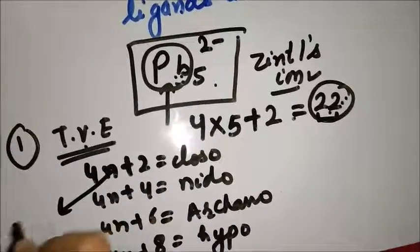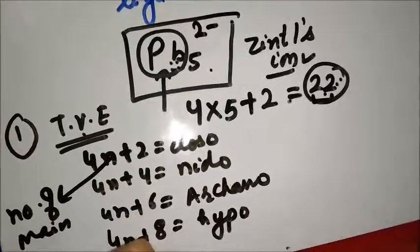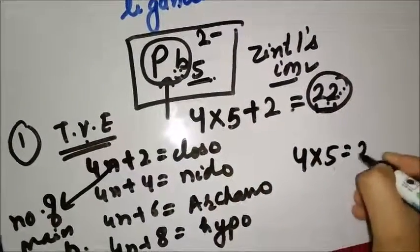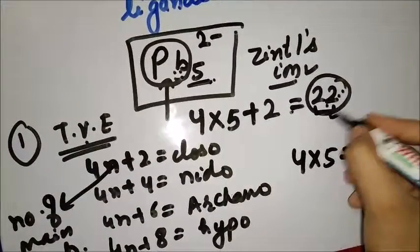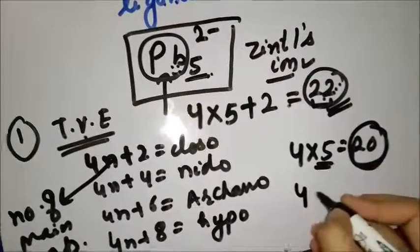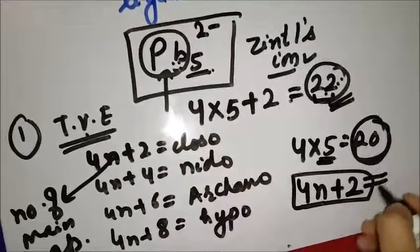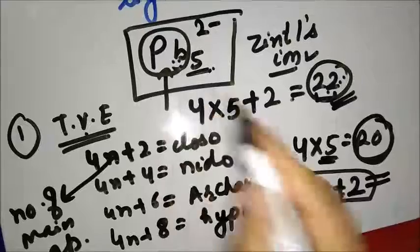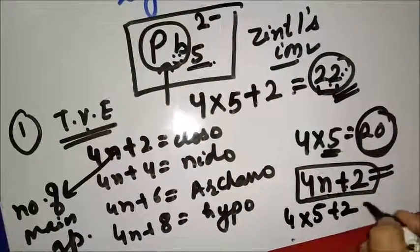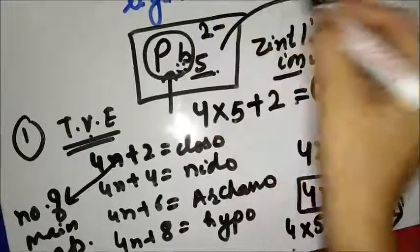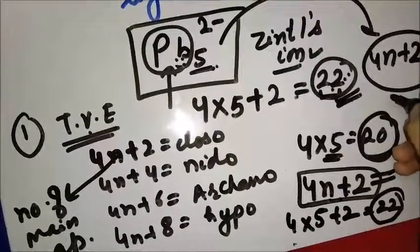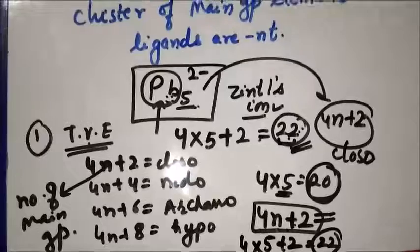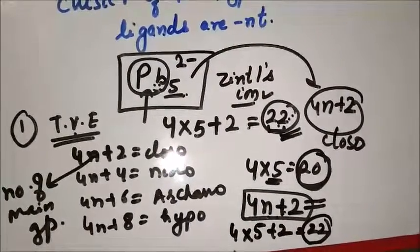Here n is the number of main group elements present. For Pb₅²⁻, 4 × 5 = 20, and total valence electrons are 22. So 4n + 2 = 20 + 2 = 22. The formula comes out to be 4n + 2, which belongs to the structure closo. So Pb₅²⁻ is closo. This is the way to calculate the nomenclature for Zintl ions. This is all about Wade nomenclature; in the next topic we will study about isolobal analogy.